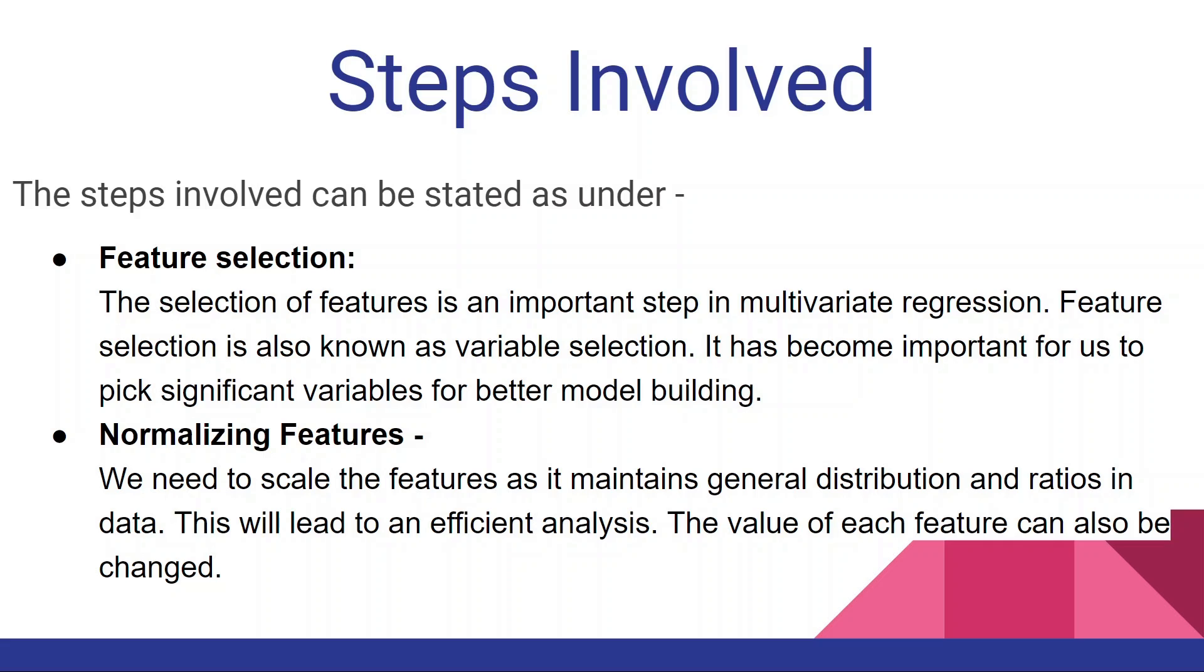Now the steps involved can be stated as: first is feature selection. The selection of features is an important step in multivariate regression. Feature selection is also known as variable selection. It has become important for us to pick significant variables for better model building.